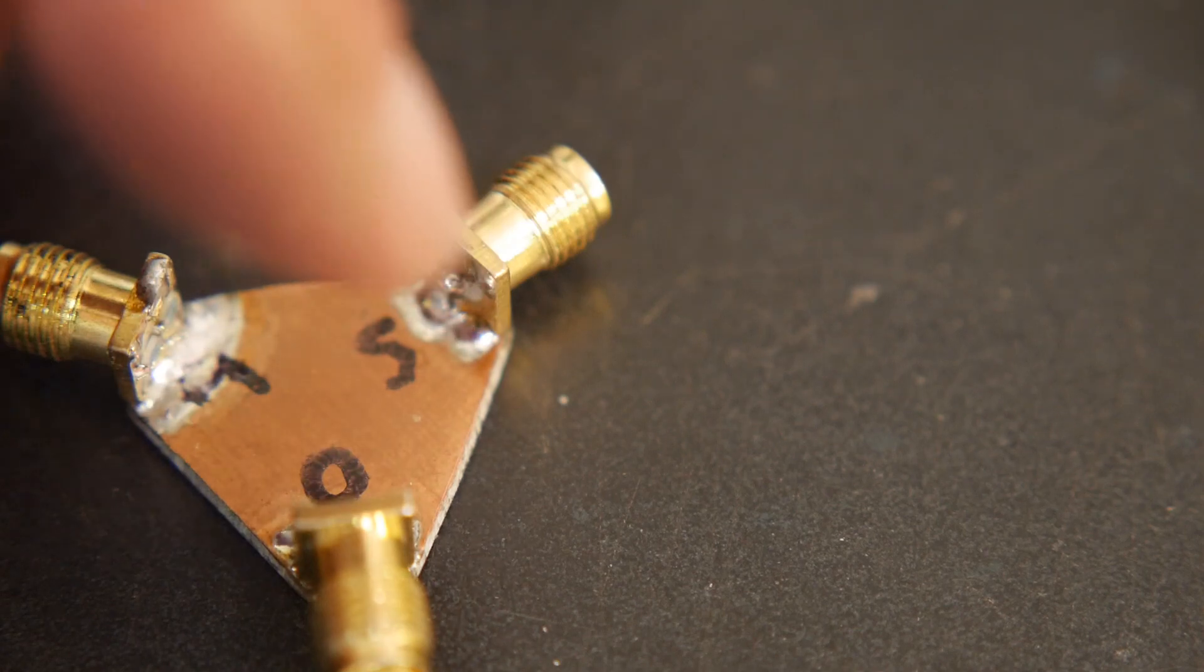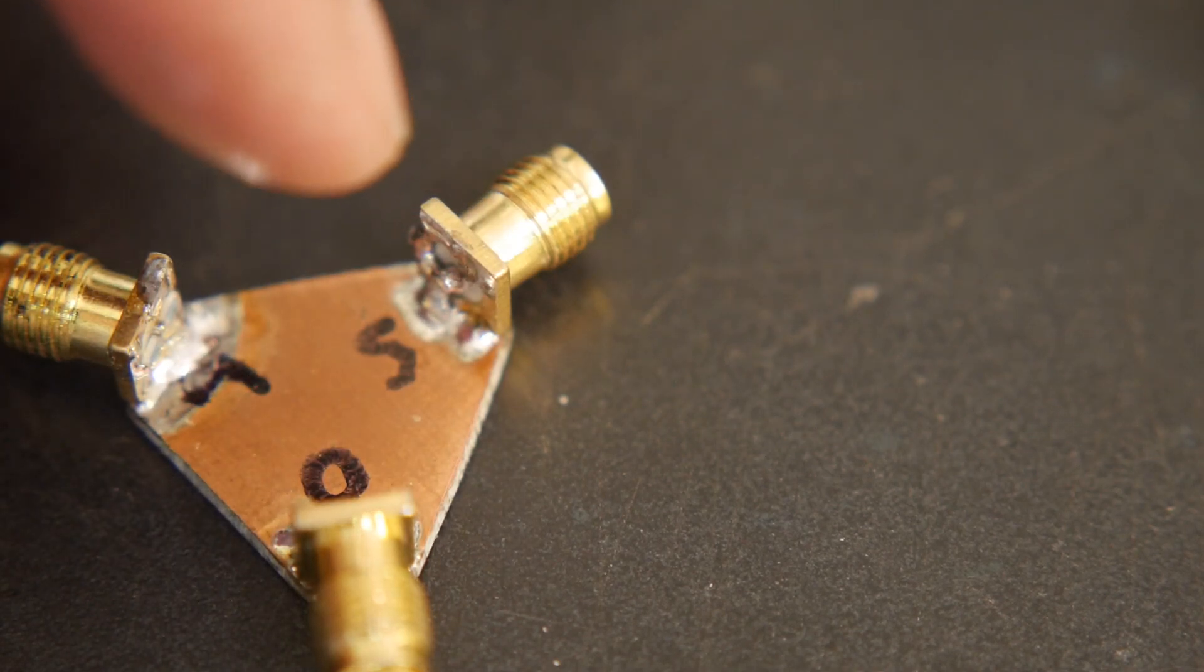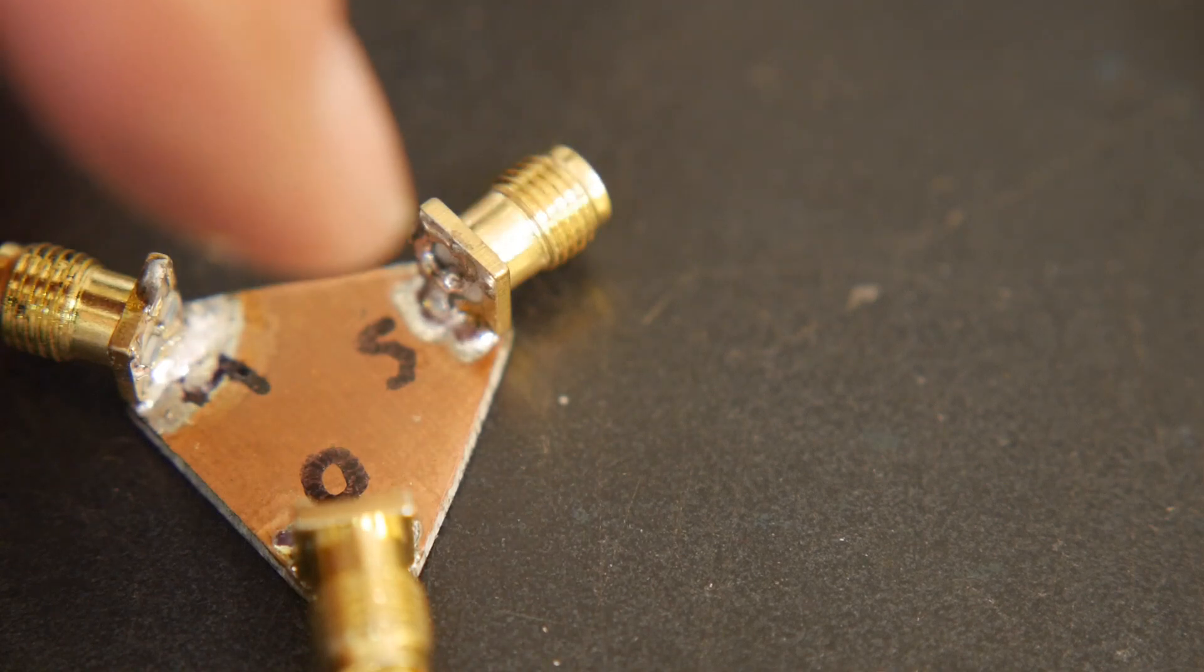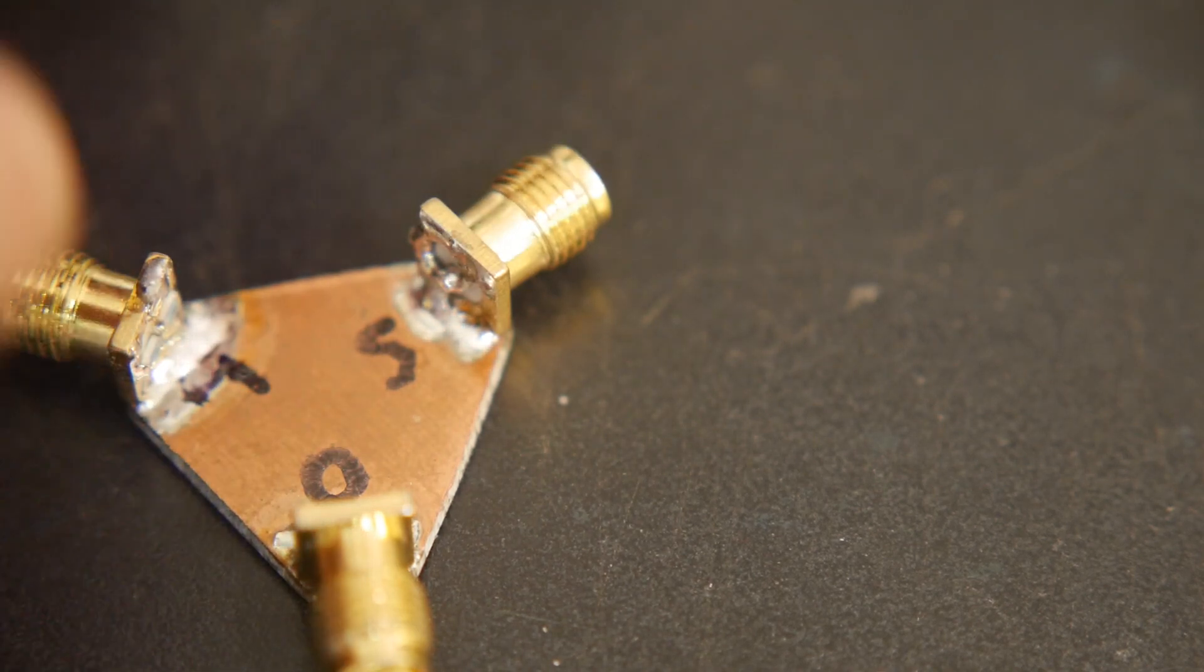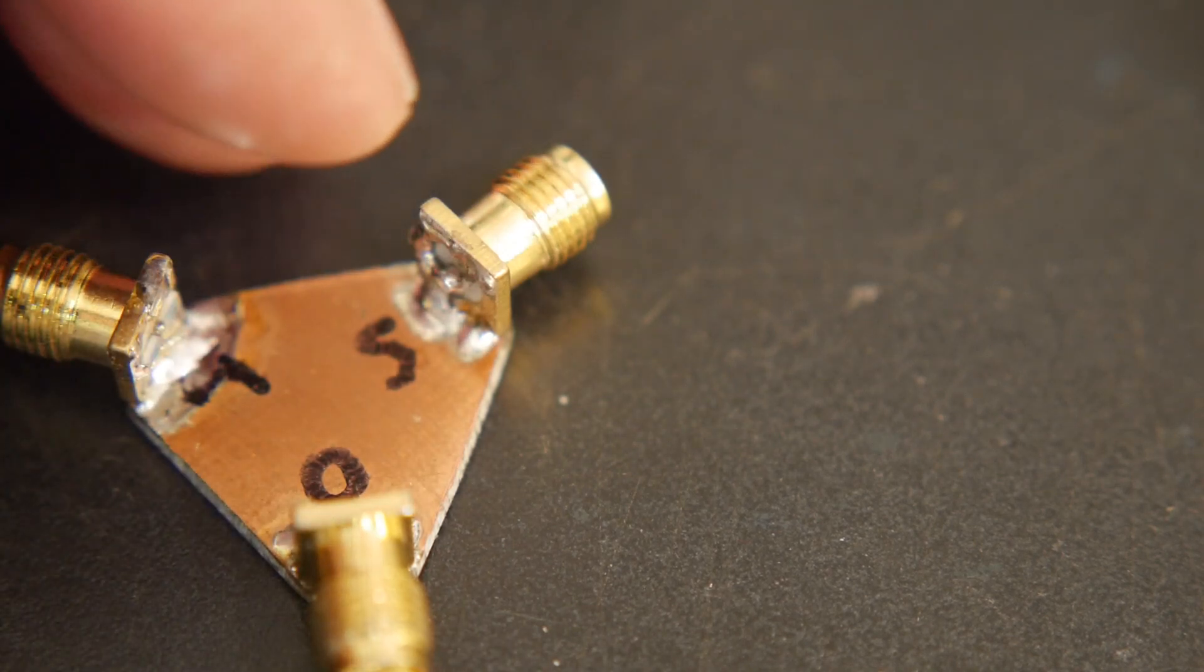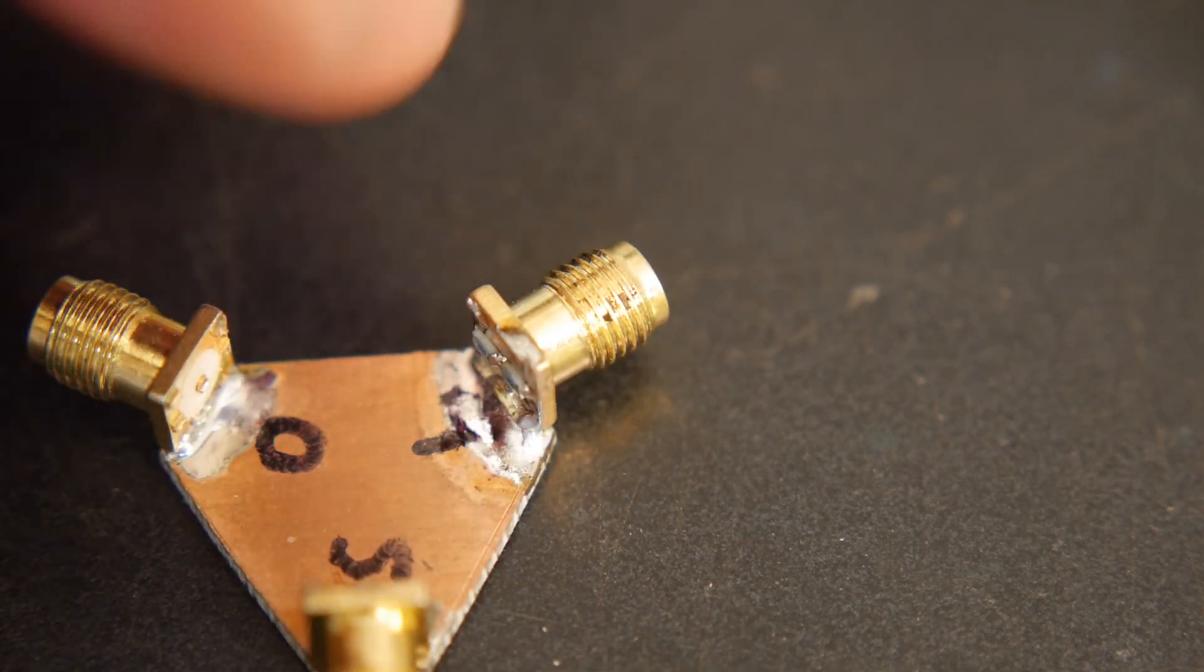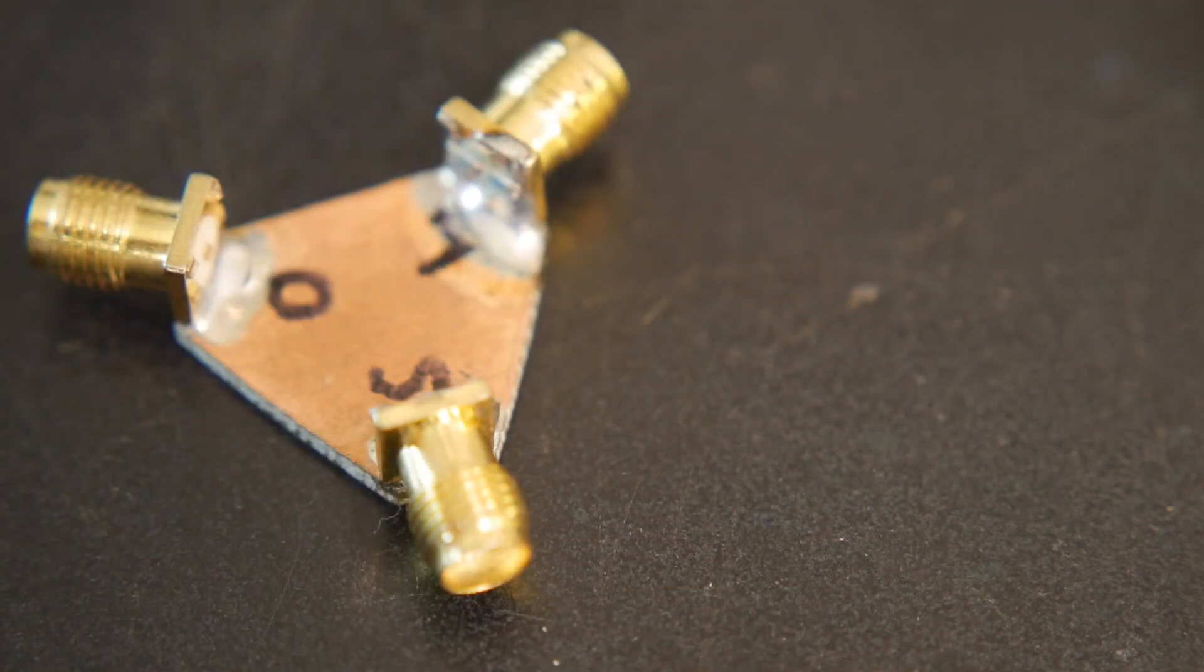The way that I did that is I just shaved off any protruding connector off of these females such that the phase plane is the same on each one. And so where the open is and where the short is and where the load resistors are are all in the same plane. So that's how I accomplished it here.